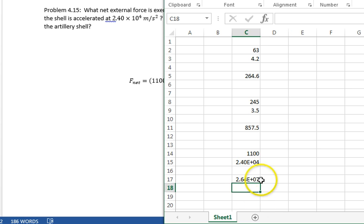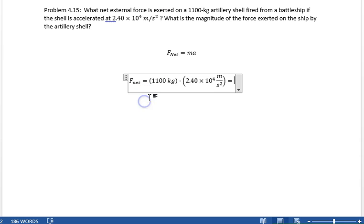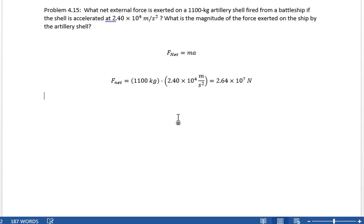So, 2.64 times 10 to the 7th. 2.64 times 10 to the 7th, and this is kilogram meters per second squared, which is Newtons.